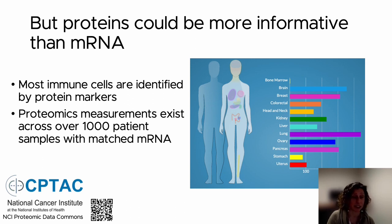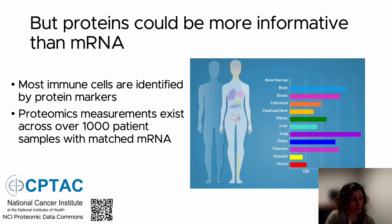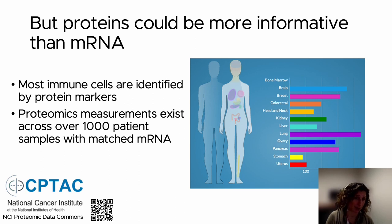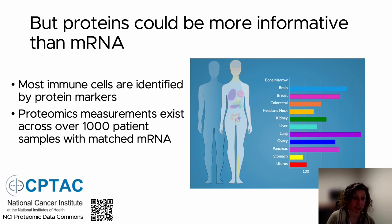We now have this data as part of the Clinical Proteomic Tumor Analysis Consortium, where we're able to have over 1,000 different patient measurements across different cancer types. This resource paper is currently in the last stages of review and will be released shortly, but it's the data we want to leverage for this project.